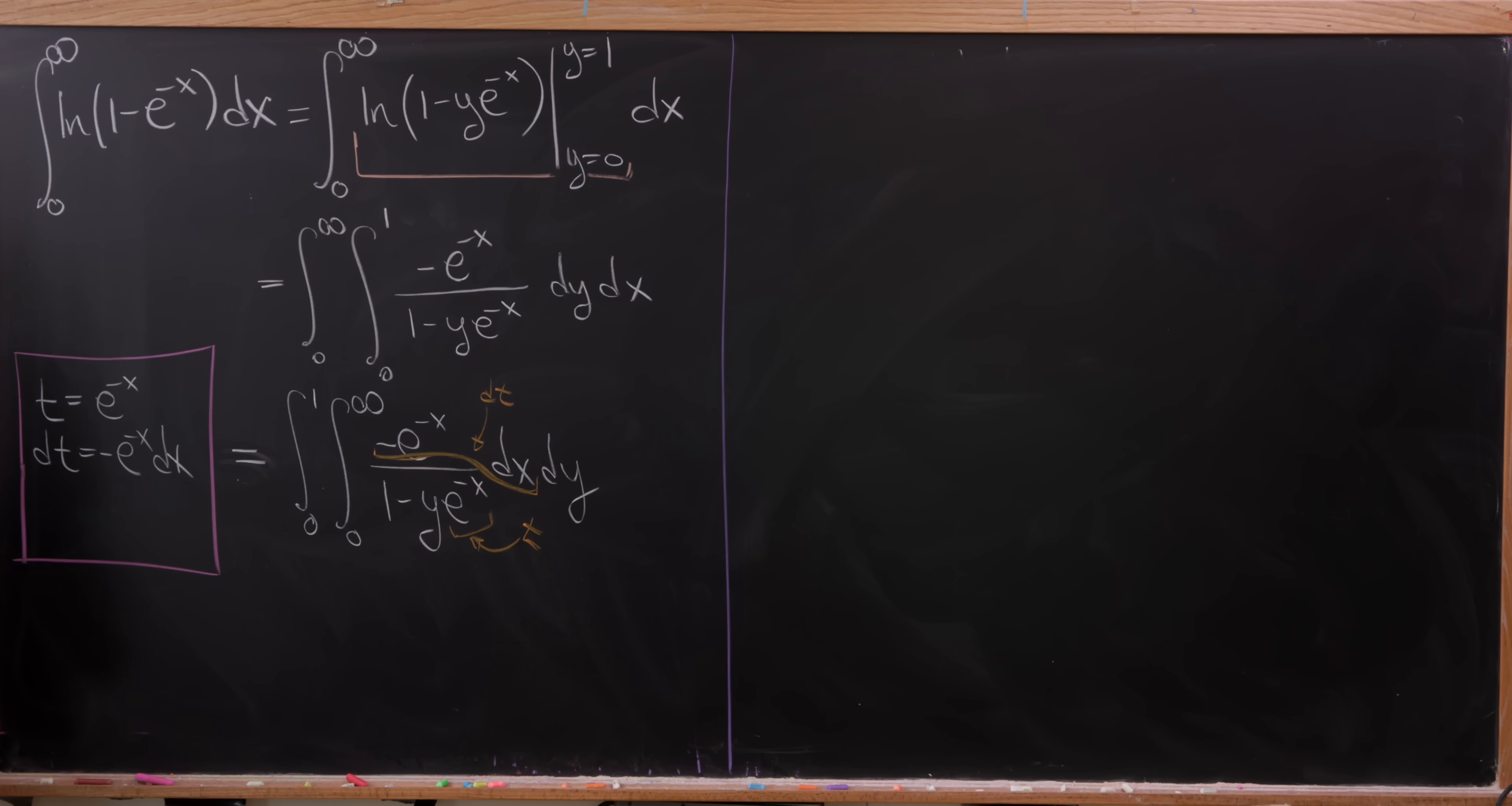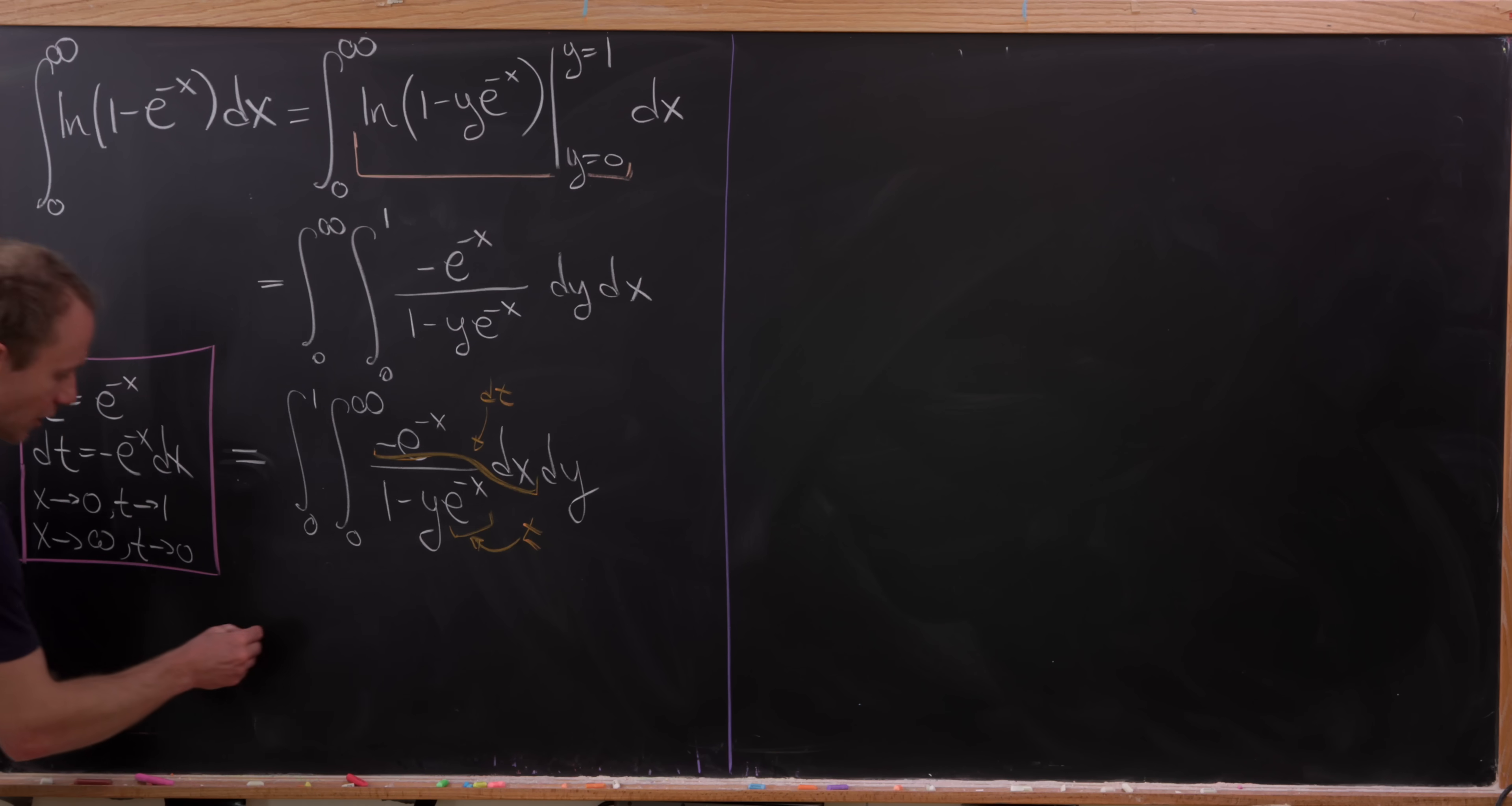But what about the bounds of integration? Let's notice as x approaches zero, we'll see that t is approaching the number one, because e to the zero is one. And then as x is approaching infinity, t is approaching zero, because we've got exponential decay here.